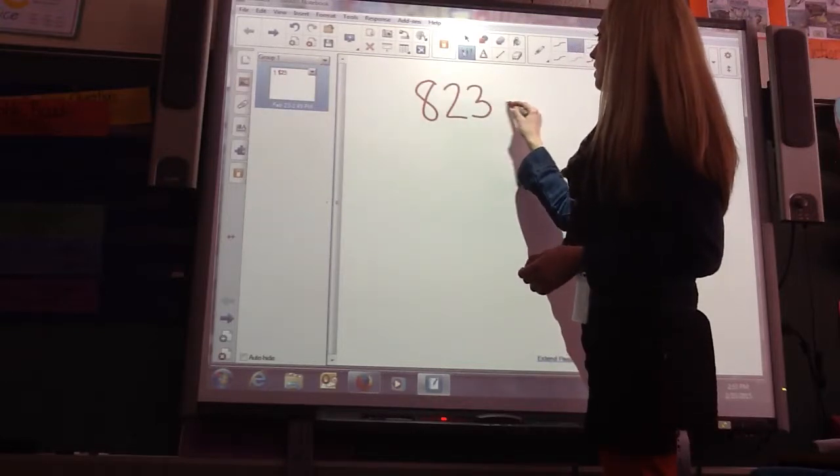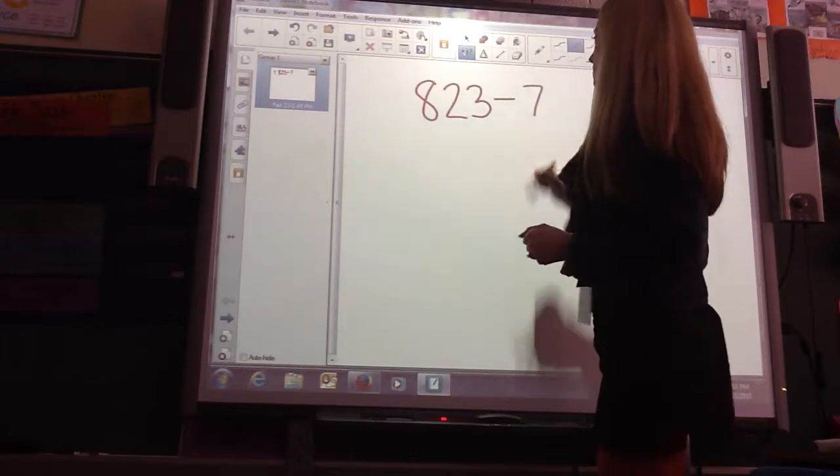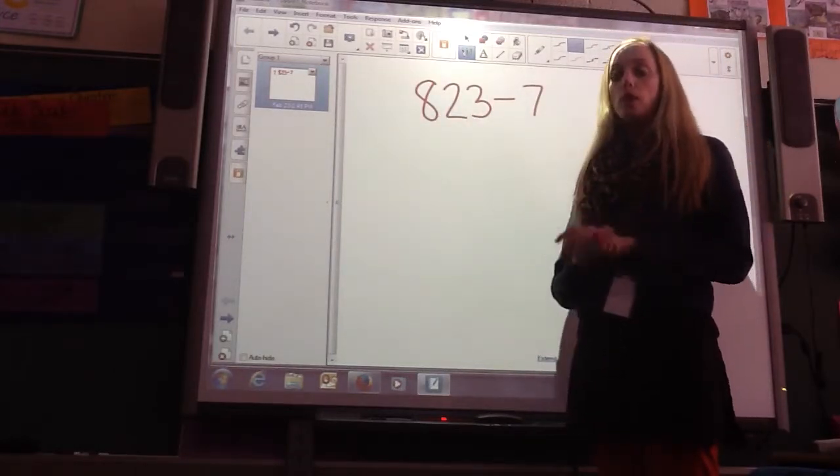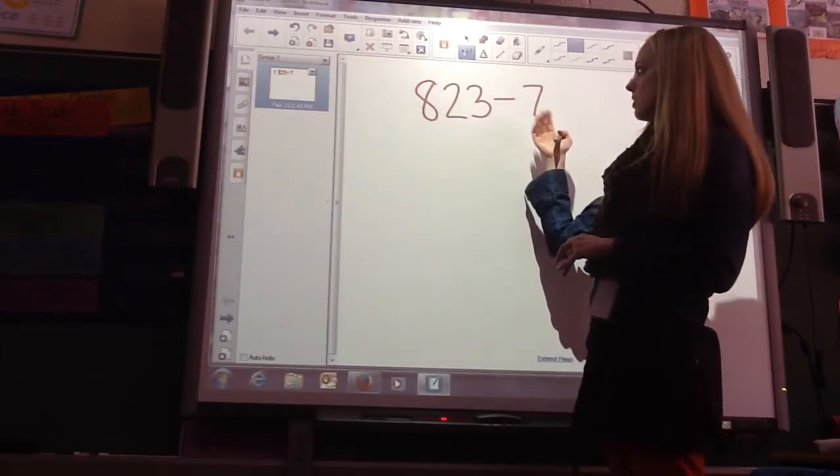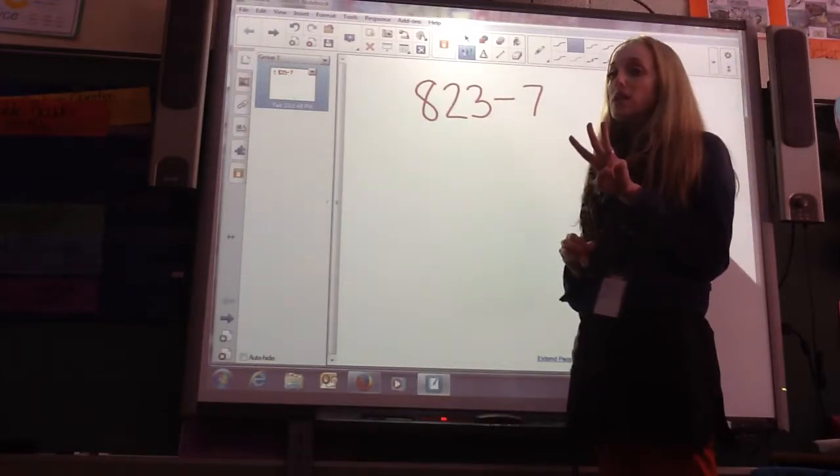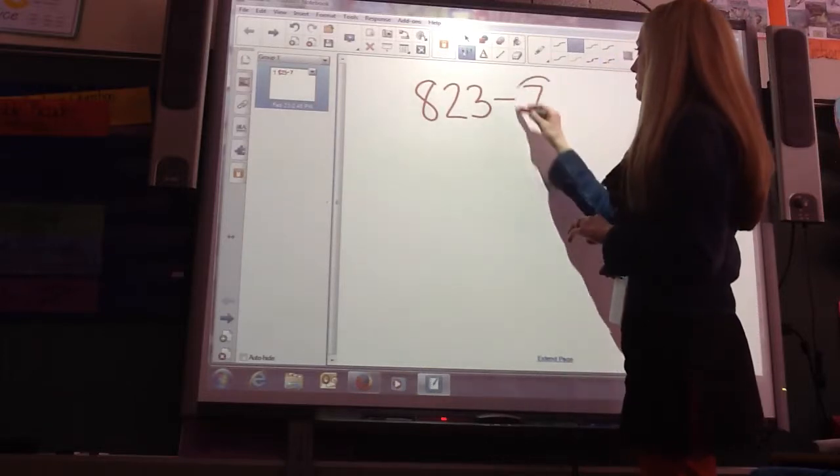So, 823 minus 7. Again, what are we subtracting? The hundreds, tens, or ones? In this case, we are subtracting the ones. So, 3 ones minus 7 ones. If we have 3 ones, can we take 7 ones away? No. So, we're going to have to turn it into a 10.